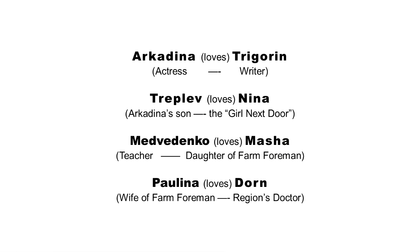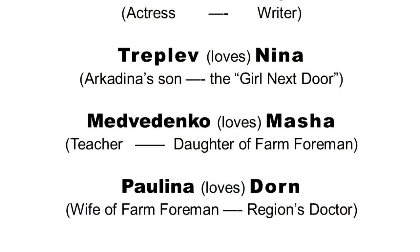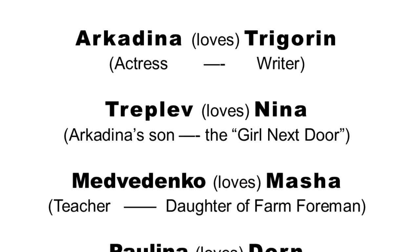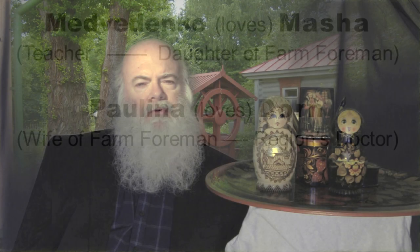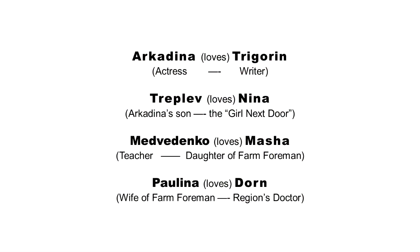Act One of The Seagull starts off with a number of different scenes in which we see pairs of people. First we see Masha and Medvedenko, followed by Sorin and his nephew Treplev, followed by Treplev with his girlfriend Nina, and then Paulina and Dorn. Within these first four chunks of Act One, we see three different pairs of romantic partners: Masha and Medvedenko, Nina and Treplev, and Paulina and Dr. Dorn. All three couples have complicated pasts and are going to become even more complicated as the play continues.